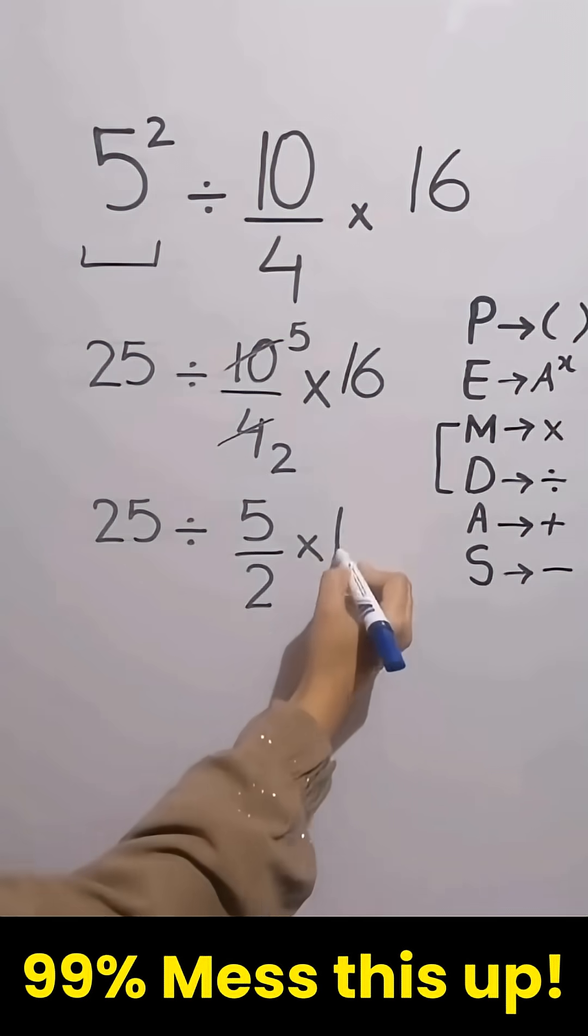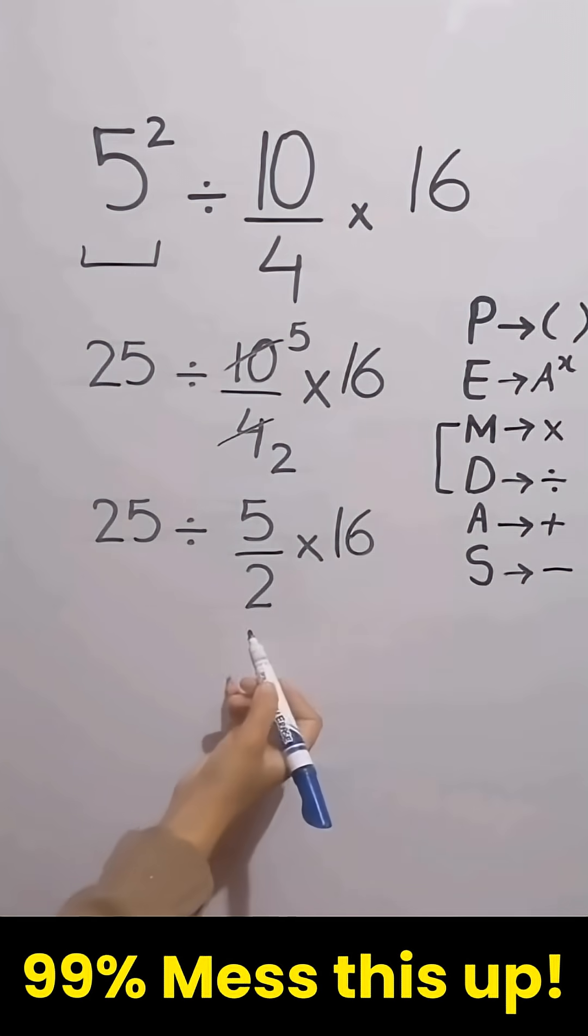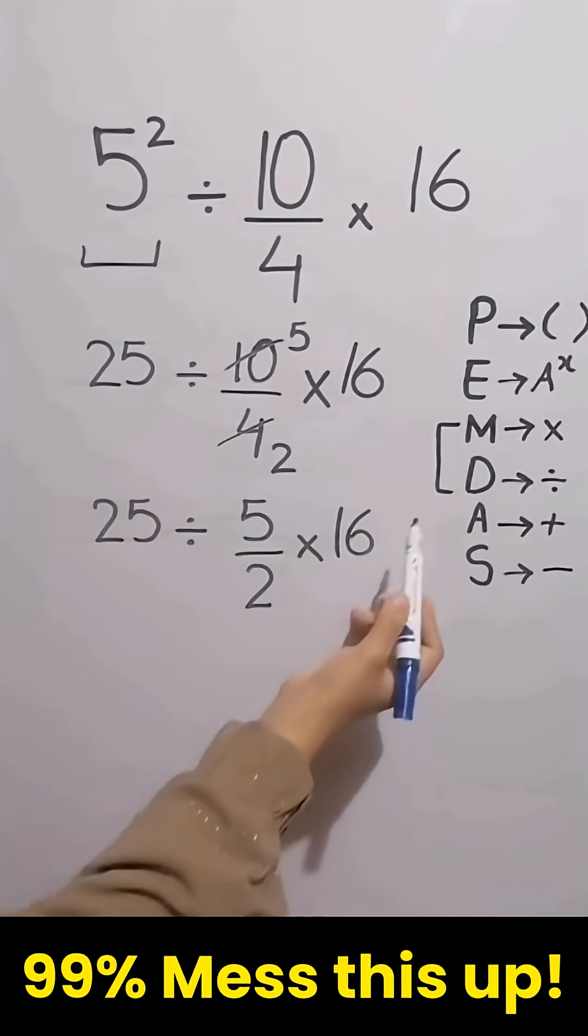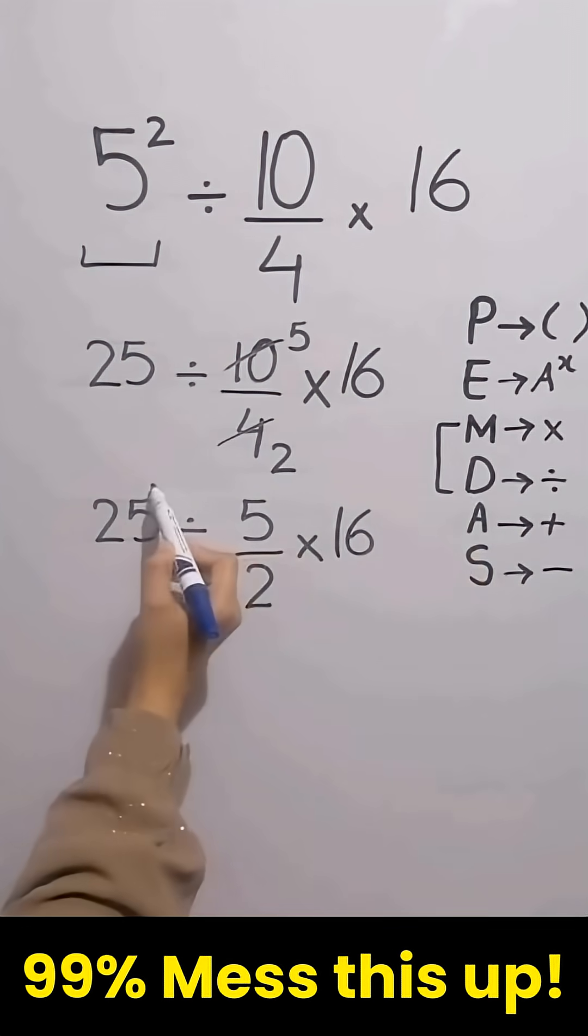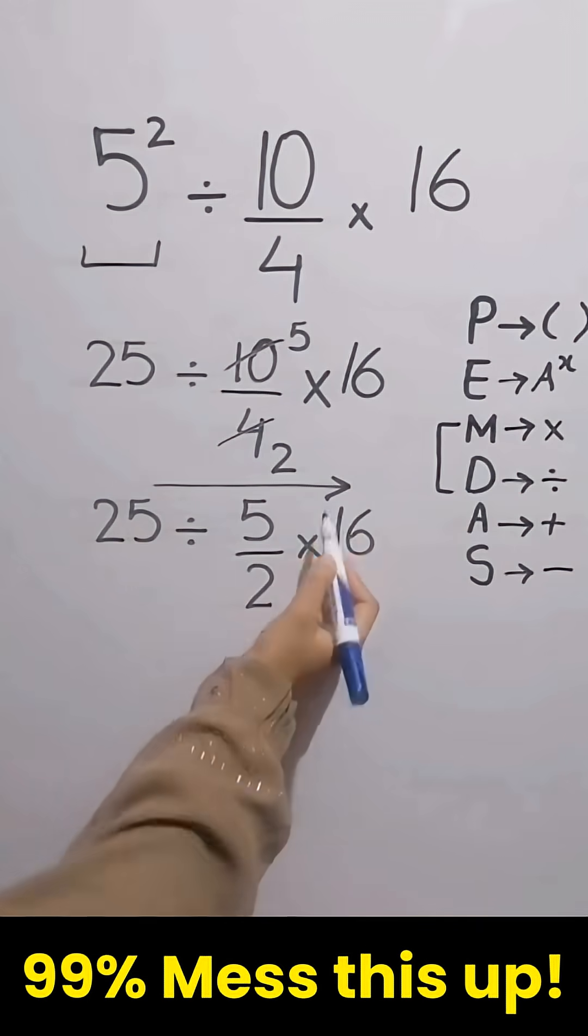Then times 16. Now in this expression we have a division and a multiplication. However, it's very important to note that multiplication and division have exactly the same level of priority in the PEMDAS, and we have to move from left to right.